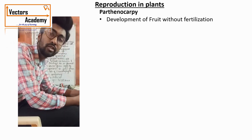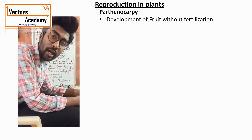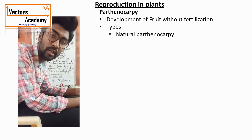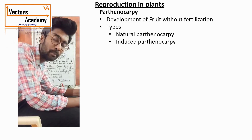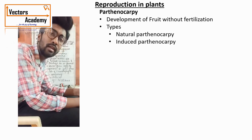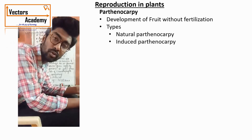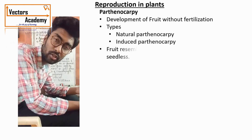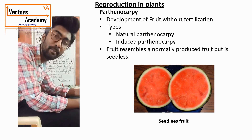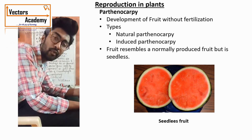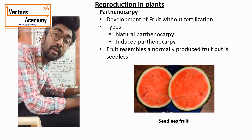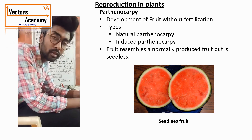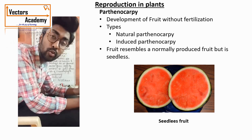Parthenocarpy is generally of two different types: one is called natural parthenocarpy, and the second is called induced or artificial parthenocarpy. Natural parthenocarpy is a process where there is formation of a fruit without pollination and fertilization — the pollen grain does not get deposited on the stigma, no pollen tube is formed, no male gamete reaches the female gamete. Example: banana.